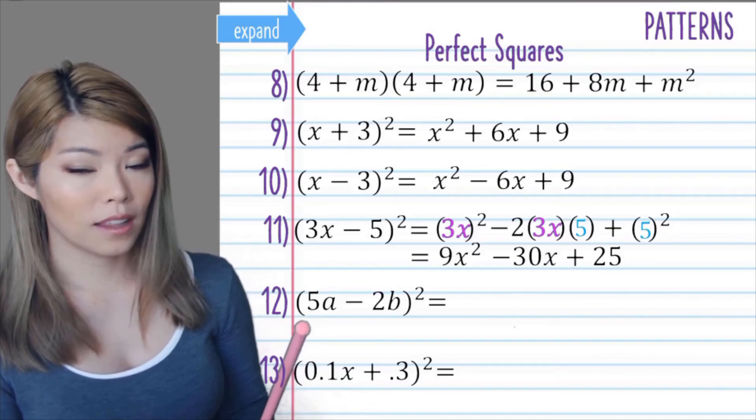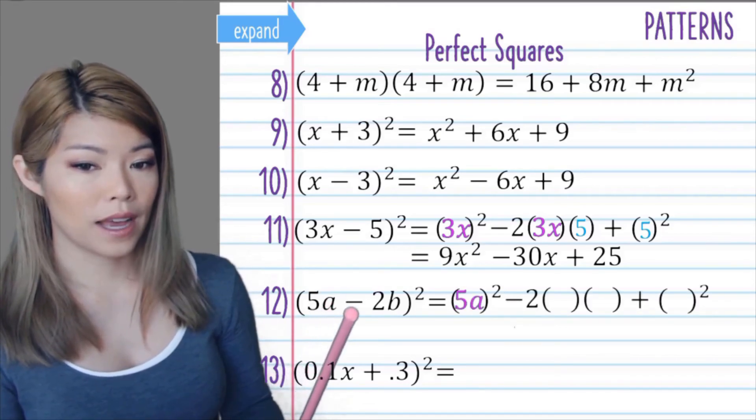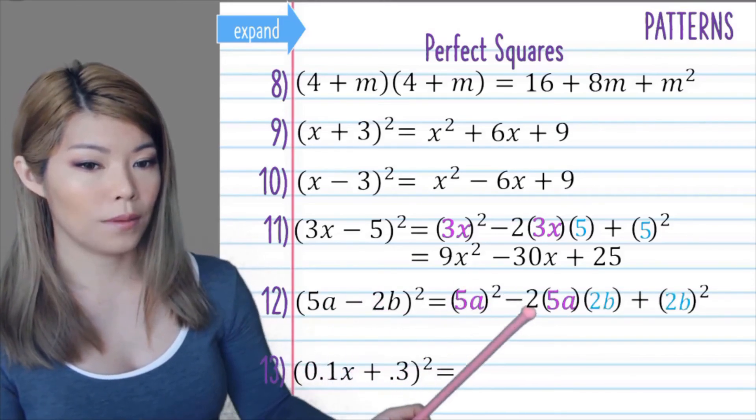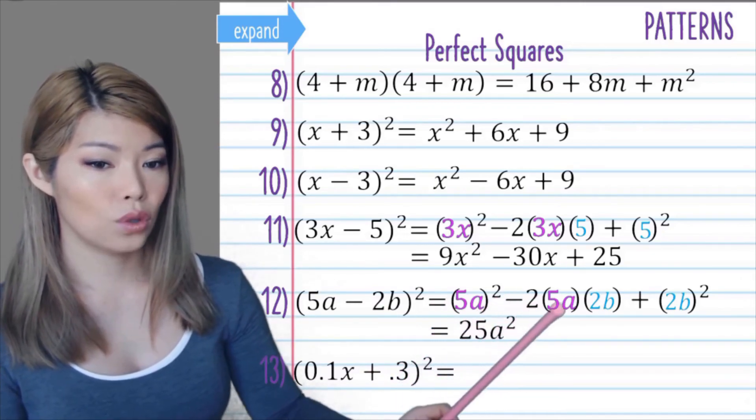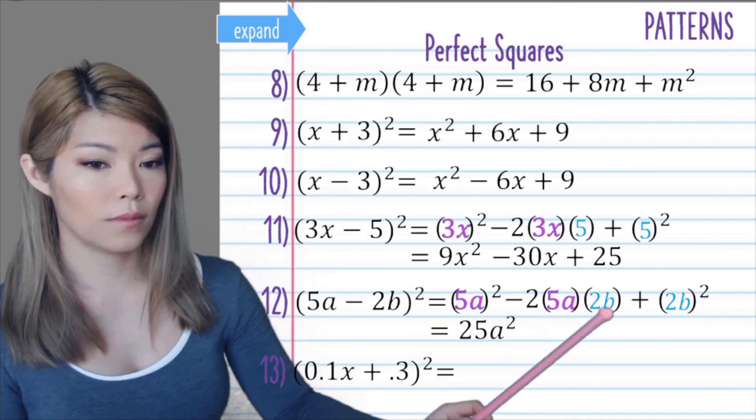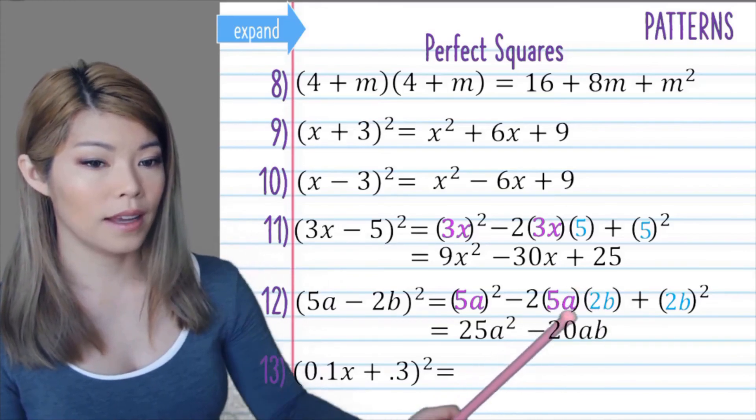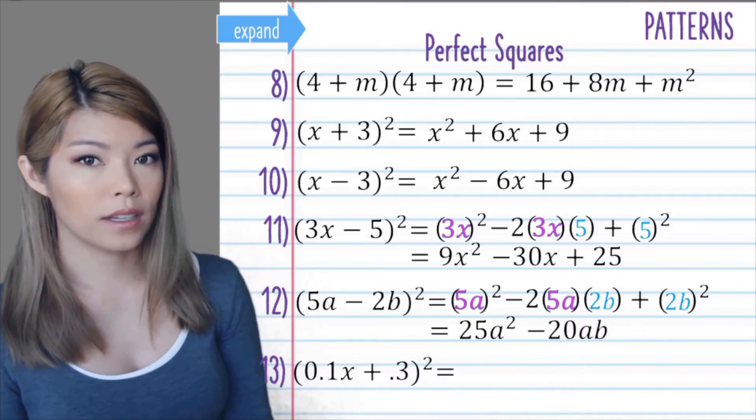Again, use brackets when there's a lot of numbers. So we have 5a as our a and 2b as our b. So now we have 25a squared minus 2 times 5 is 10 times 2 is minus 20ab, and then 2b squared is 4b squared.